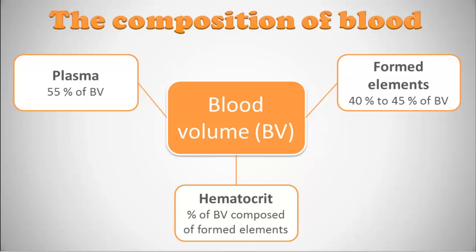Then we have something called hematocrit. You may have heard of this, especially in terms of blood doping, because the World Anti-Doping Agency has thresholds for it. Hematocrit is the percentage of blood volume composed of these formed elements. On the next slide I want to talk mostly about plasma and formed elements and give you an idea of what the composition of blood is.